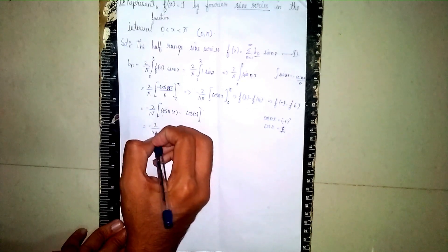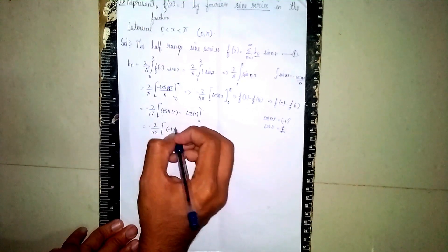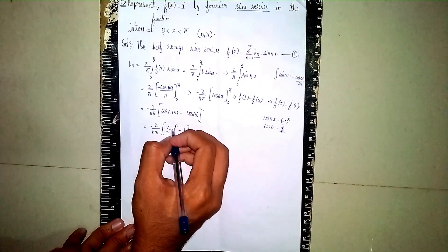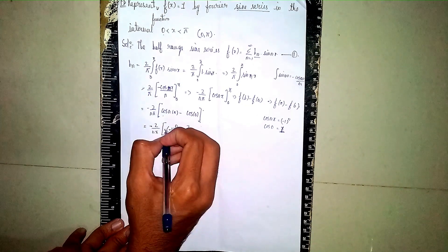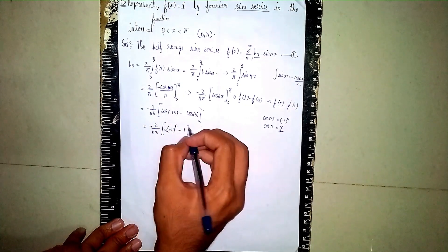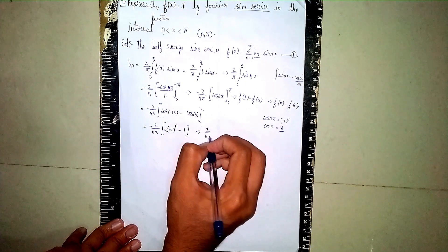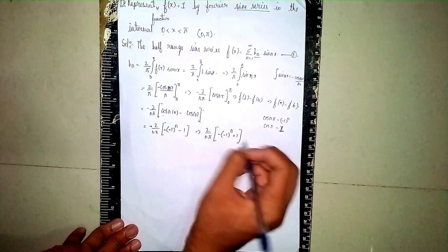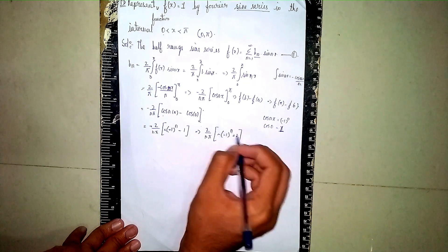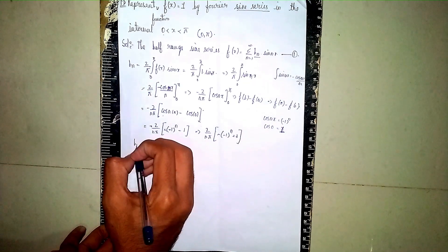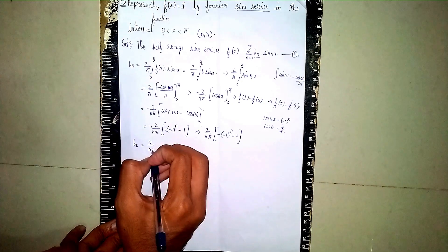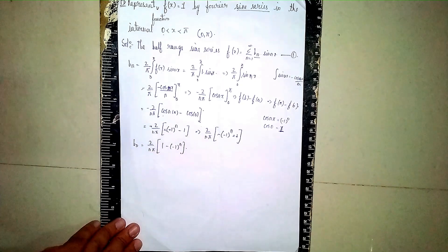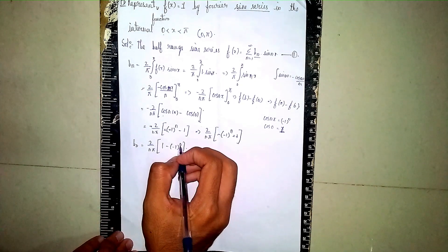It becomes minus (2/nπ) times [(-1)^n minus 1]. Distributing the minus sign: minus times (-1)^n gives plus (-1)^n outside, and minus times minus 1 gives plus 1. So b_n = (2/nπ)[1 - (-1)^n].